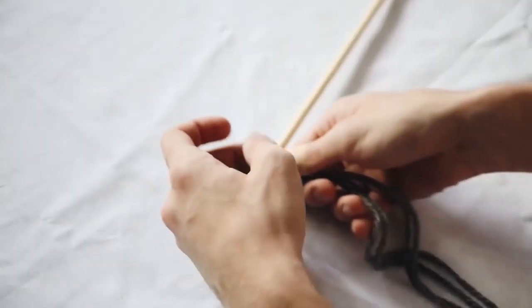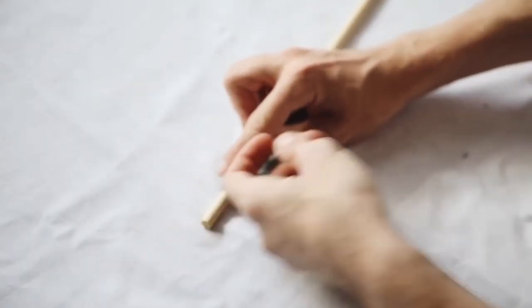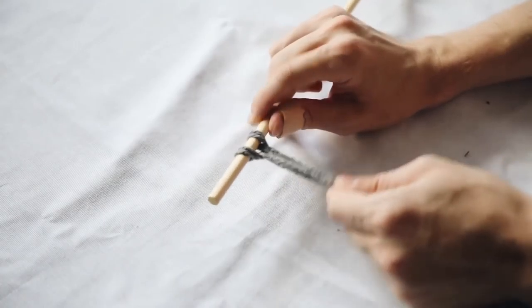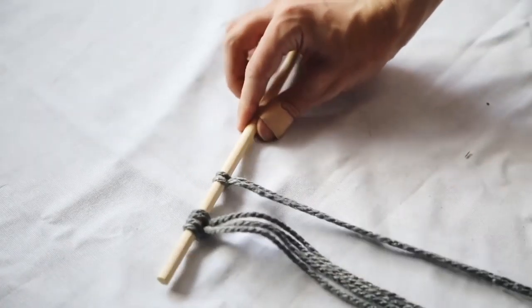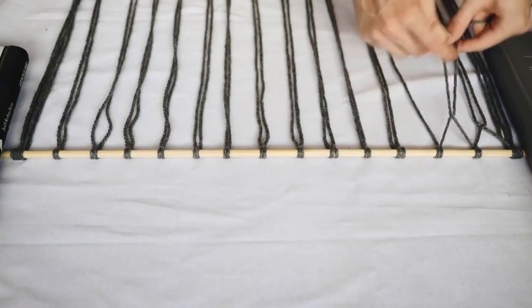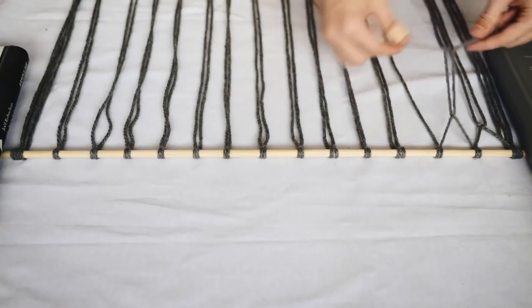I went ahead and cut my yarn to about six-foot lengths of each strand. For the start of this project on the very left side, as you can see here, I looped two pieces of yarn on the start. Then every single section after that, I just did one piece of yarn folded in half and then looped onto our wooden dowel.